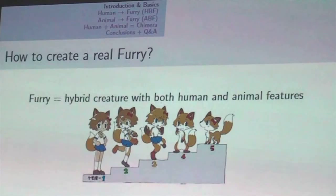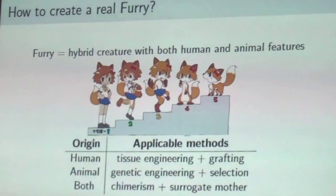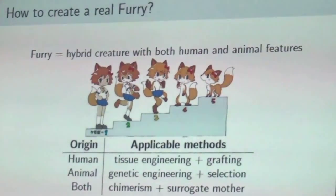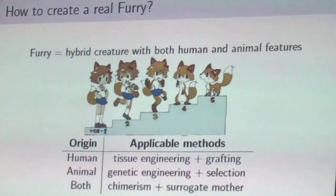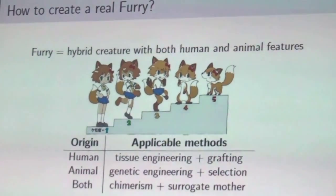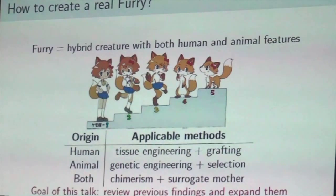Just to be sure, the definition of furries here is quite broad — it's about a hybrid creature which features both animal and human traits. That can include cat girls, intelligent animals, talking animals, and everything in between. So we have three points of access to create a furry: either start from the human with tissue engineering, start from the animal, or start from both with chimeras.